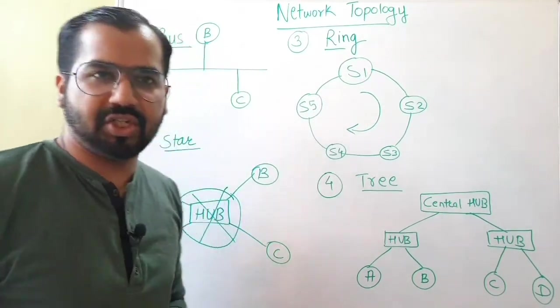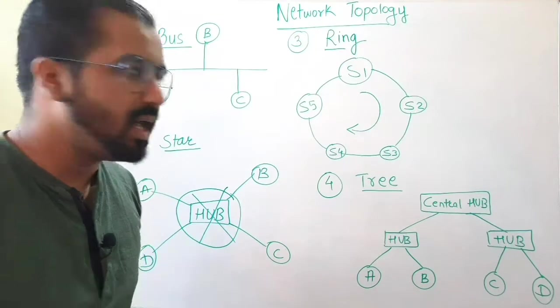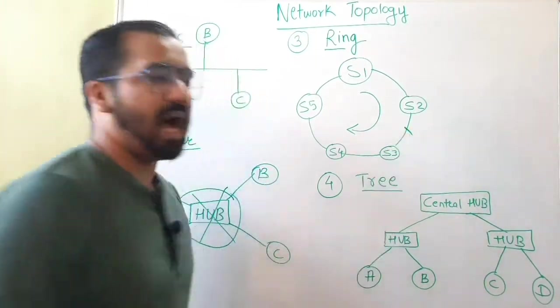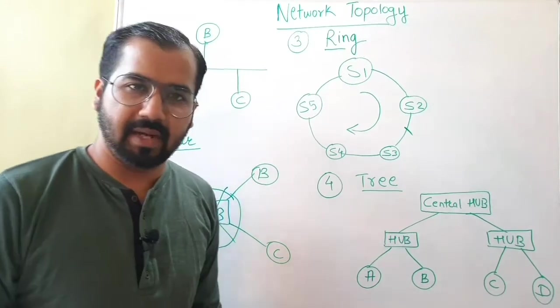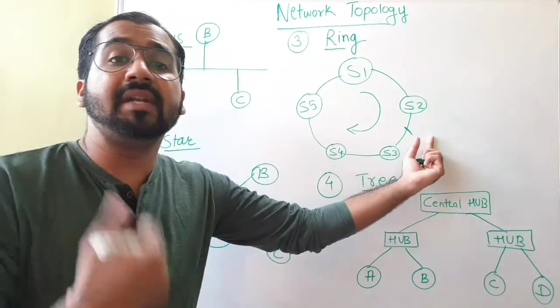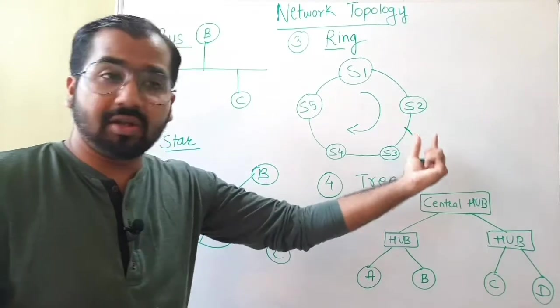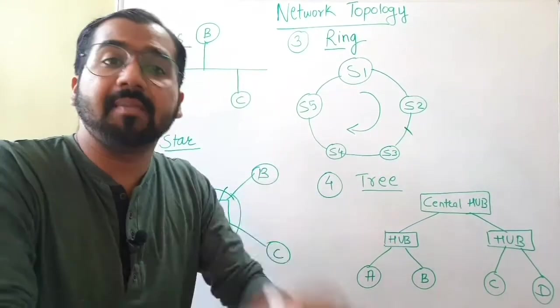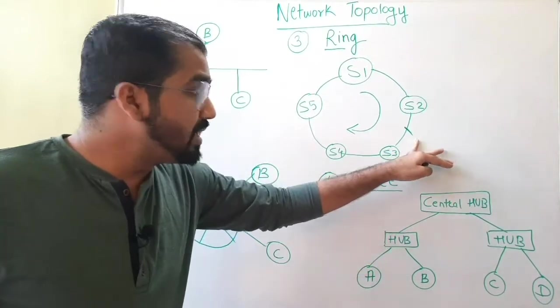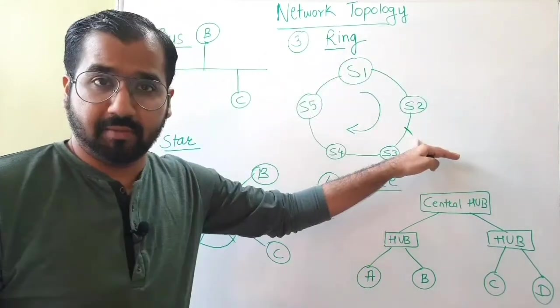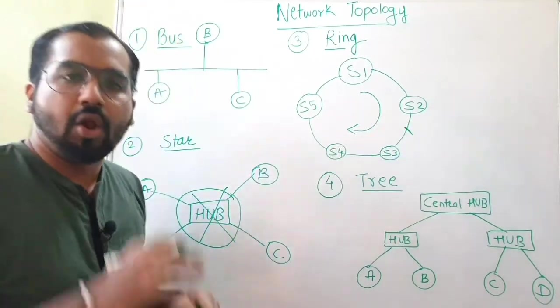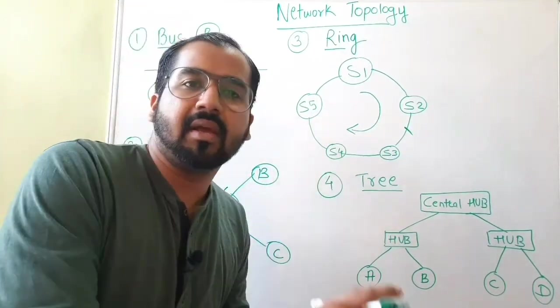But some of the disadvantages of this ring topology is that if these links are braked, then if they are not immediately resolved, this problem of link breakage or cable breakage or wire breakage, if this persists for a longer duration, if it is not attended, resolved immediately, then a lot of data loss can be encountered.